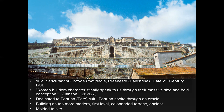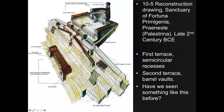It's dedicated to the Fortuna or fate cult; Fortuna spoke through an oracle, a tradition the Greeks had as well. The building on top is more modern; the first level, the colonnaded terrace, is ancient. Here's a reconstruction giving an idea of what it originally looked like. Like what we had seen previously, it was molded to the site. The first set terrace had semi-circular recesses, and you can see how the arch forms continue over and over again.